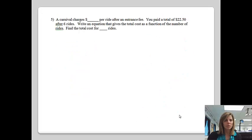Let's try one more where we've got a story problem situation going on. No problem, because we can handle story problems just fine. A carnival charges $2.50 per ride after an entrance fee. You paid a total of $22.50 after 6 rides. Write an equation that gives the total cost as a function of the number of rides, and then find the total cost for 15 rides. Notice we have two different things going on here. First of all, we're going to write an equation, and then we're going to find the total cost. So kind of two problems for the price of one. Let's see if we can either identify m or b. My slope is the constant rate of change, or what's going to be constantly changing in this, and that's how many rides I ride. It's going to be $2.50 per ride.